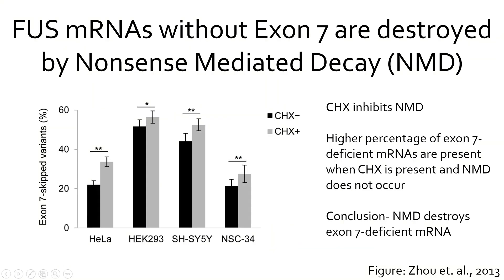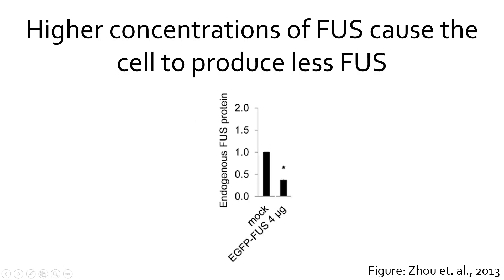When exon 7 is spliced out, this results in the implementation of a premature stop codon in the RNA transcript. This aberrant RNA is then recognized by the cell's nonsense-mediated decay mechanism and destroyed, as shown in the figure above. Based on this data, scientists have hypothesized that FUS auto-regulates itself through controlling alternative splicing of exon 7.